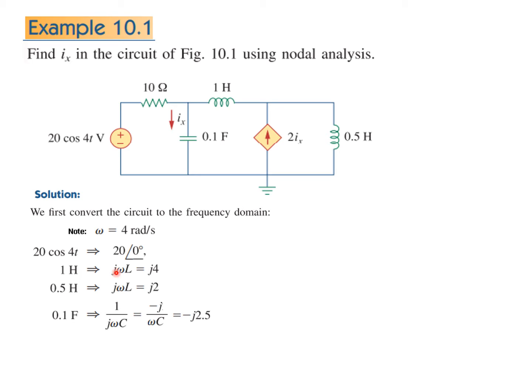The inductor is written as j omega L. In this case, omega is 4, L is 1, so it will be j4. Here omega is 0.5, so it will be j2. For the capacitor, we write 1 over j omega C, but I prefer minus j divided by omega C—it makes life simple. Putting in the values of omega C, we get minus j2.5. So we have all the components converted into phasor domain. Our new circuit now looks like this—ready to solve.